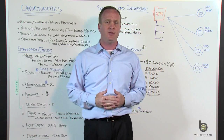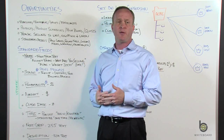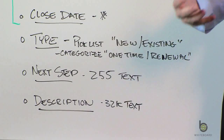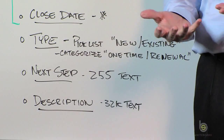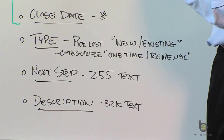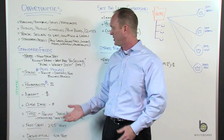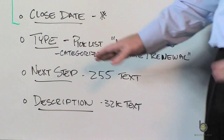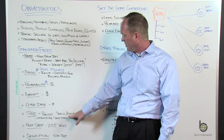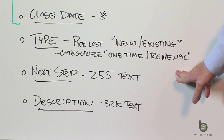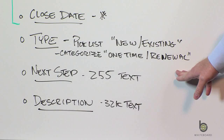The type field is a pick list field. Out of the box, it has 'New Business' and 'Existing Business' as values — really a field to categorize your opportunity. You can ask, how much am I selling to a new customer versus an existing customer? You don't have to use those out-of-the-box values. Clients have used values like one-time or renewal sale. It's a pick list you can customize any way you want.